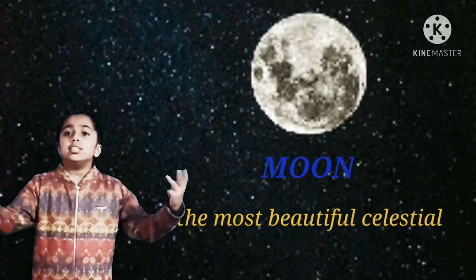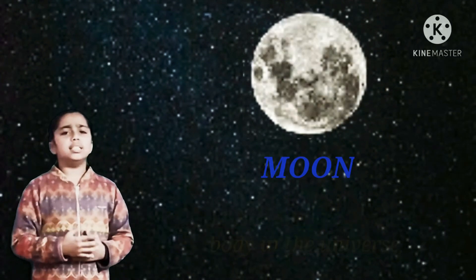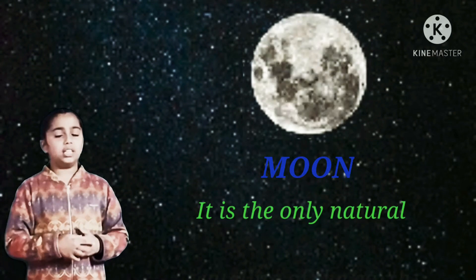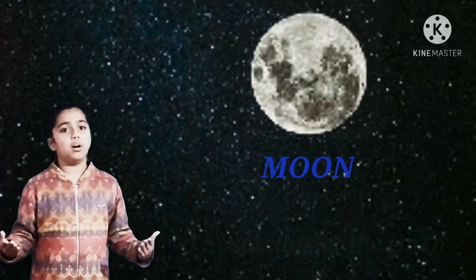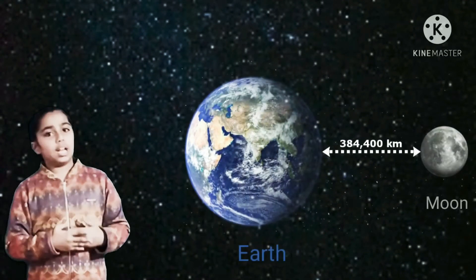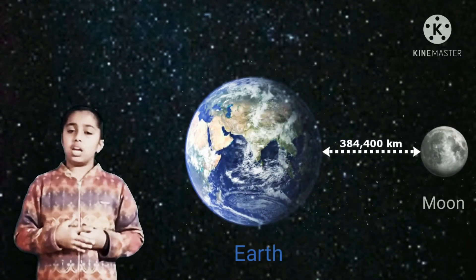The most beautiful celestial body in the universe. The moon is the only natural satellite of the earth. Even though it is the closest neighbor, it is still 384,400 kilometers away from the earth.